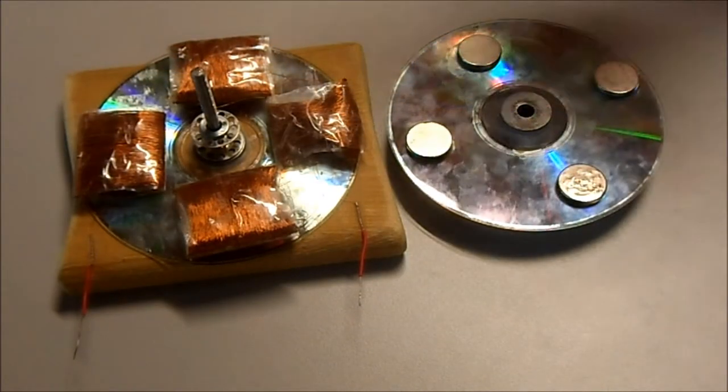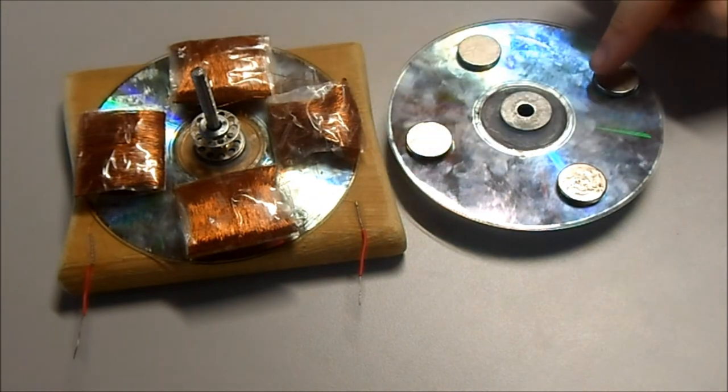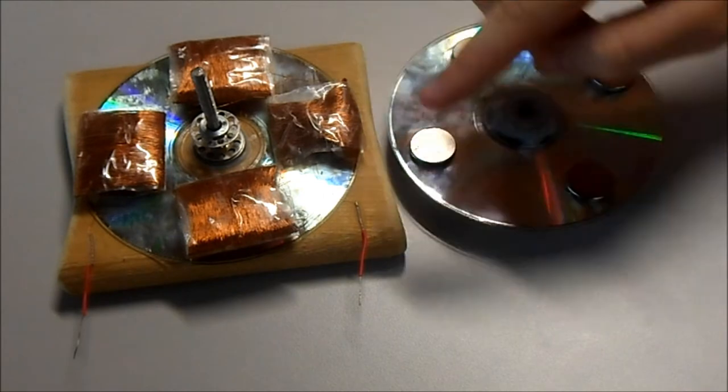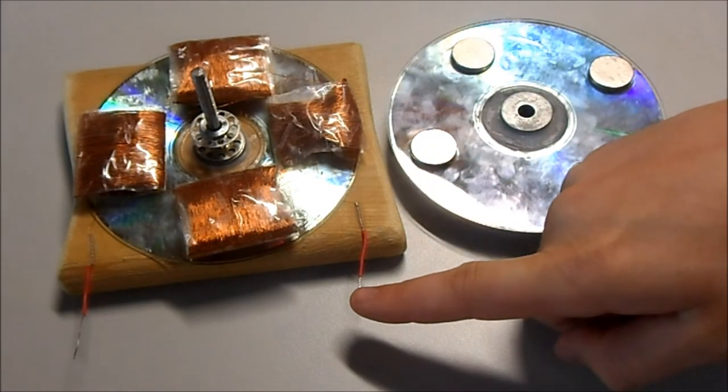For the CD generator we have four coils of wire on the bottom CD and four neodymium magnets on the top CD. We've connected four coils in series and then on the edges we've connected thicker wire for durability purposes.